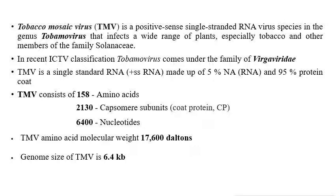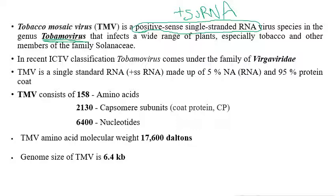Tobacco Mosaic Virus, abbreviated as TMV, is a positive single-stranded RNA virus. As mentioned in an earlier presentation, nearly 78 percent of plant pathogenic viruses have a genome made up of positive single-stranded RNA. TMV is a positive single-stranded RNA virus particle that comes under the genus Tobamovirus, which infects a wide range of plants, especially tobacco.